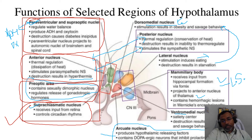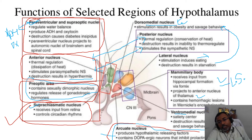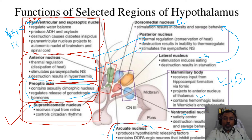The release of gonadotropin hormone is also under the control of the arcuate nucleus, which contains dopaminergic neurons that inhibit prolactin secretion, as well as producing various hypothalamic releasing factors.